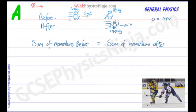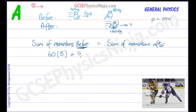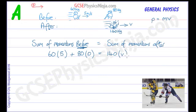Let's now do the calculation knowing that momentum is mass times velocity. For the before case: we've got 60 kilograms multiplied by 5 meters per second, plus 80 kilograms — but this player is stationary, so it's multiplied by zero, giving no momentum. The sum of momentums afterwards would be 140 kilograms multiplied by V, the velocity of them all tangled in a heap sliding across the ice.